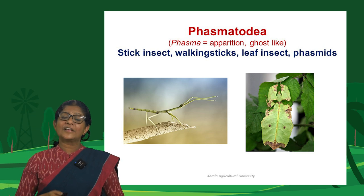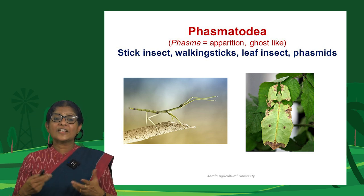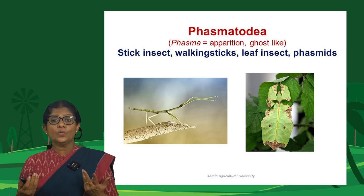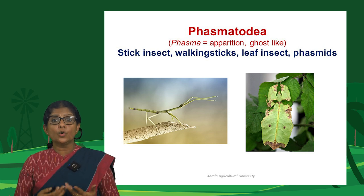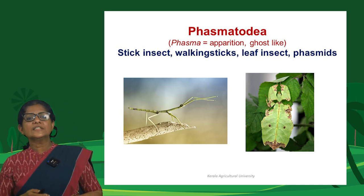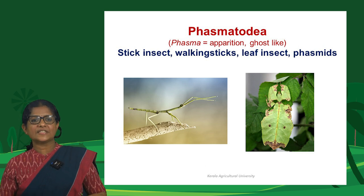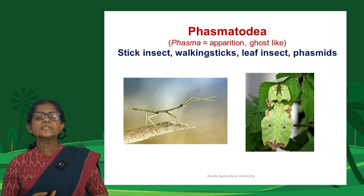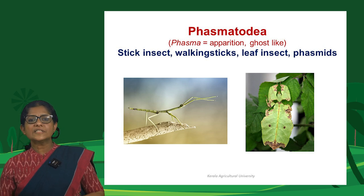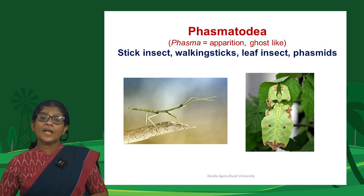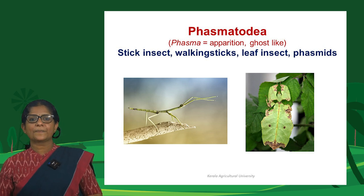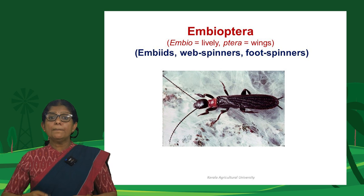Phasmatodea — 'phasma' means apparition or ghost-like — includes stick insects and leaf insects; stick insects resemble dried sticks and leaf insects resemble leaves. They are also called walking sticks or phasmids. Embioptera members are called embids, web spinners, or foot spinners; they can construct webs like spiders, and the silk for webbing comes from glands on their forelegs. 'Embio' means lively, as they are always found moving actively forward and backward. They also exhibit parental care.